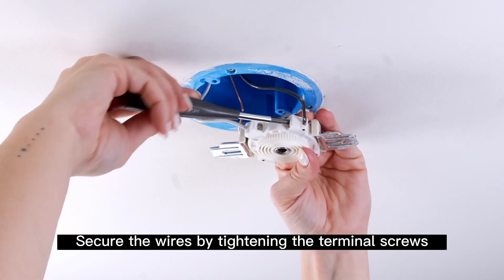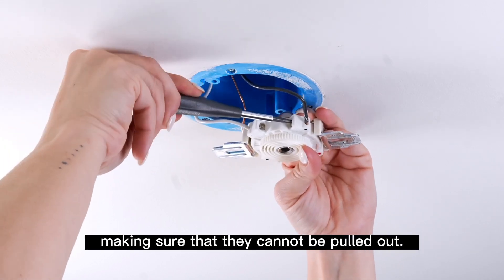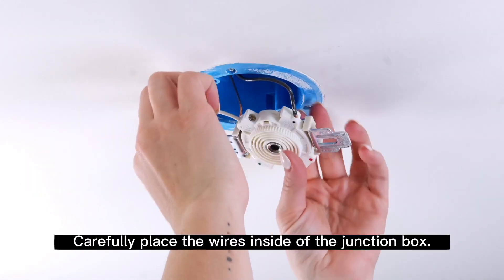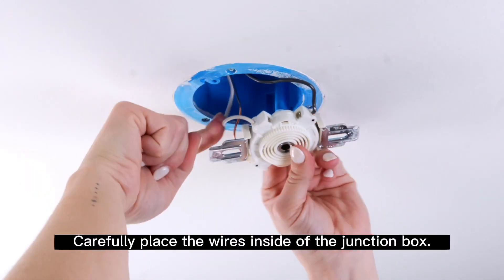Secure the wires by tightening the terminal screws, making sure that they cannot be pulled out. Carefully place the wires inside of the junction box.